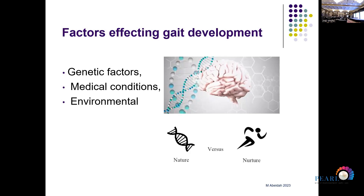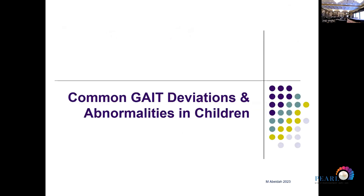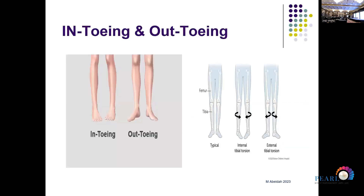There are many common gait deviations in normal children. One of the commonest is in-toeing and out-toeing, which we see regularly in our clinic. It is quite normal in very young children, usually due to twisting of the tibia and femur. Children generally grow out of it by six or seven years of age, though occasionally there is an underlying orthopedic problem which needs intervention.